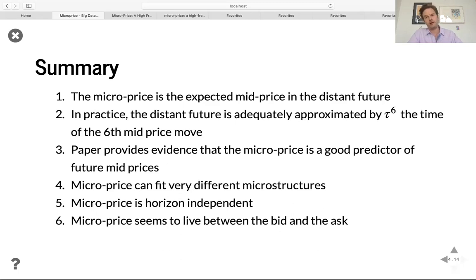The paper, if you look at the empirical section, you'll see that there's evidence that the micro price is a good predictor of future mid prices. And in fact, the micro price can fit very different microstructures, ranging from large tick Bank of America type stocks to small tick Chevron type stocks. And the way micro price is defined is in a horizon independent way. And we find empirically that the micro price seems to live between the bid and the ask, even though it's not constrained to be there.